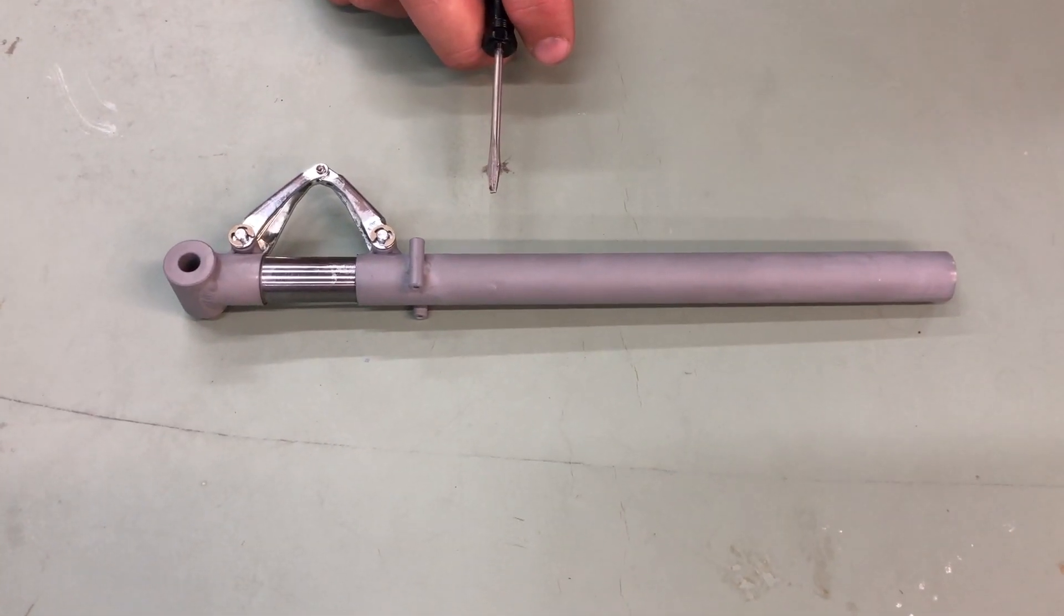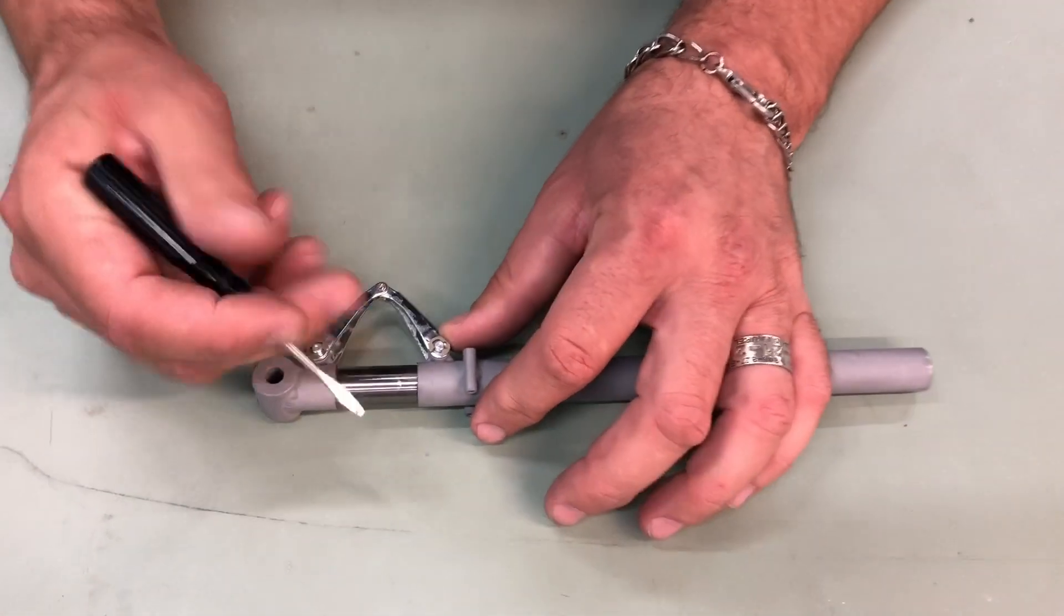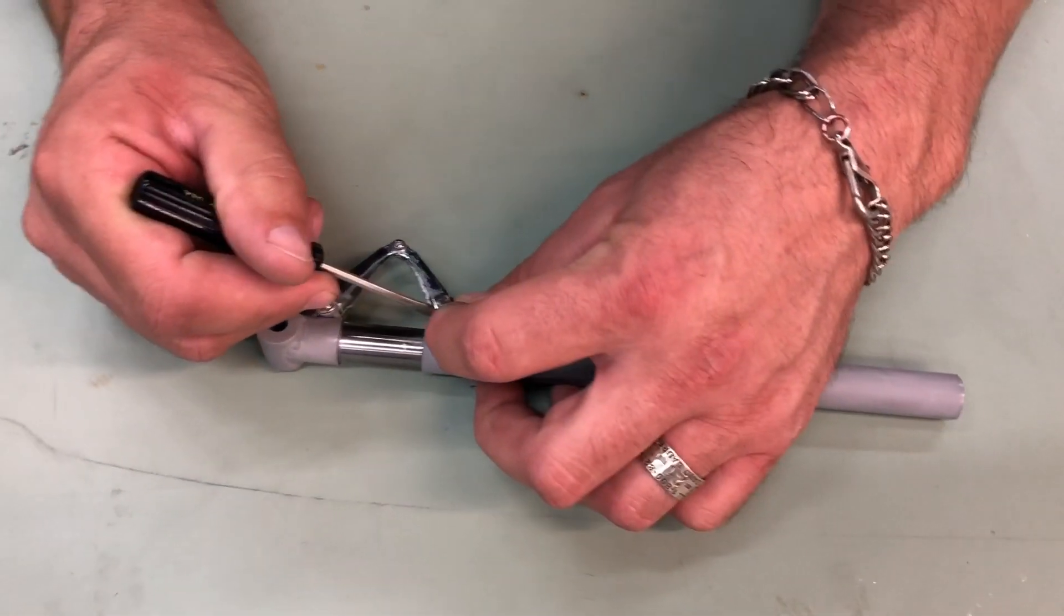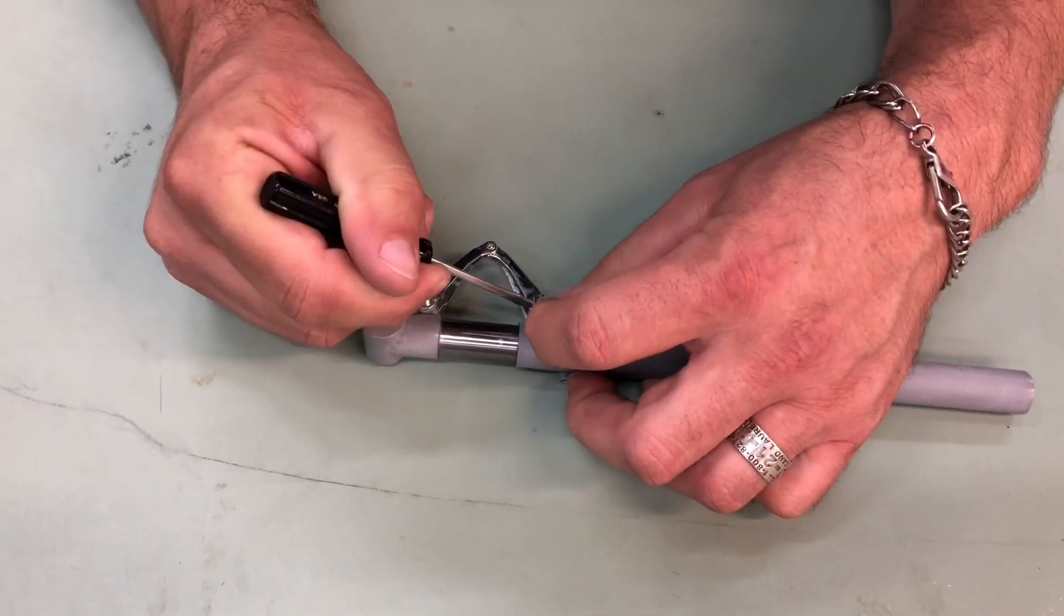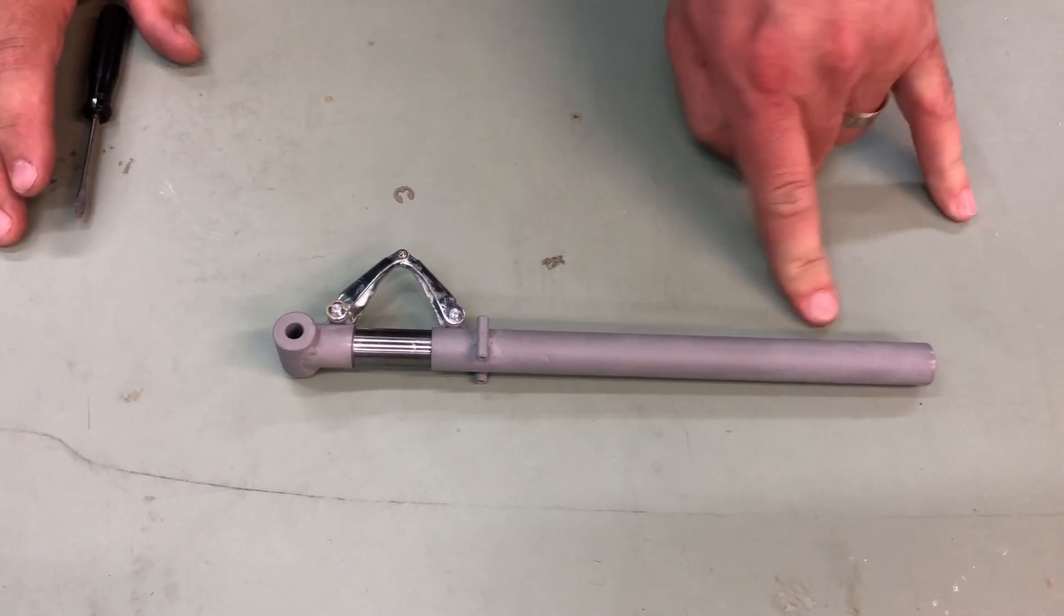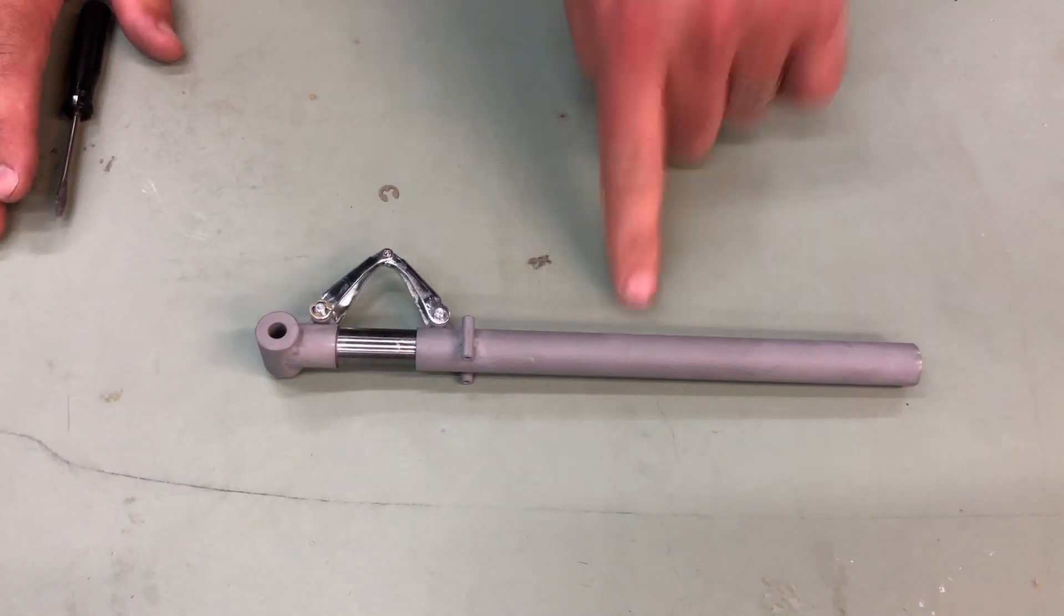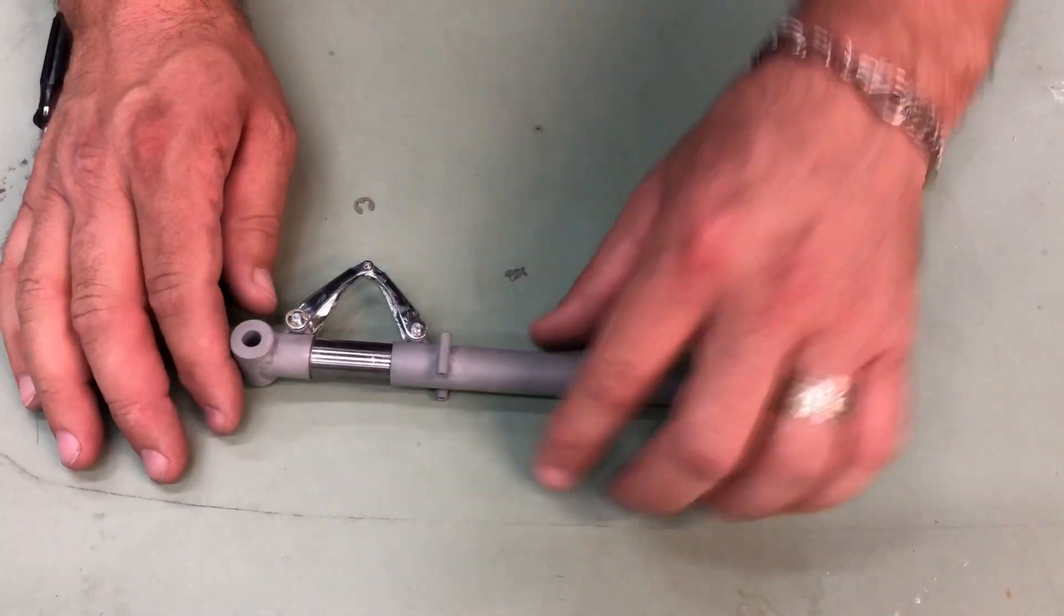So let's go ahead and take this apart, let's show you what everything is inside here. So first thing we have to do is we have to take off this e-clip and then under control because there is a spring inside of here, so keep this under control when you remove the clevis pin.